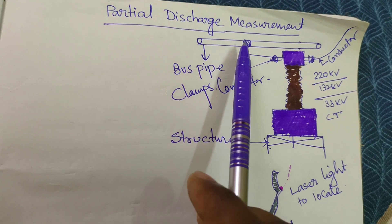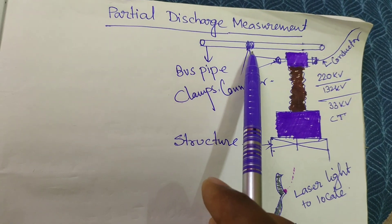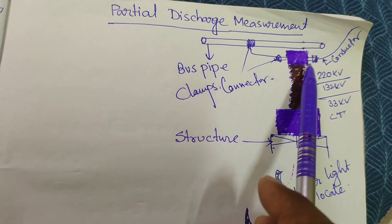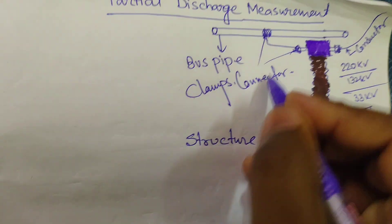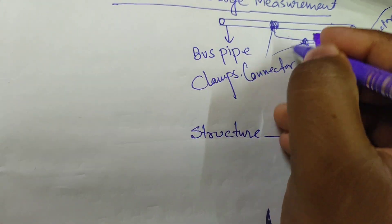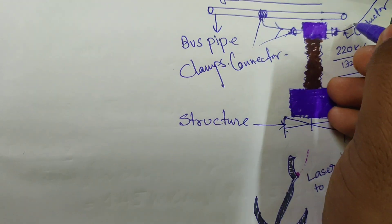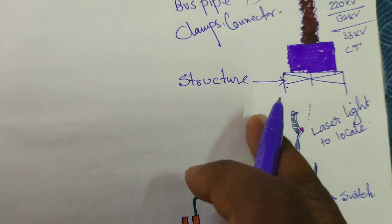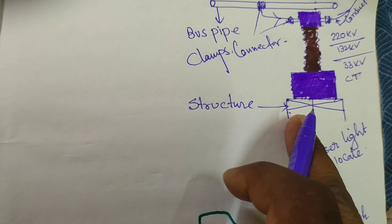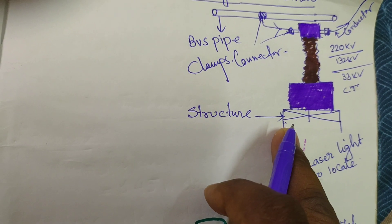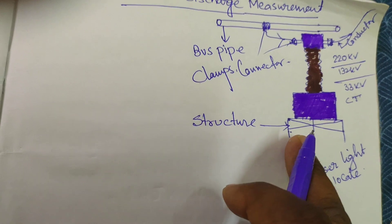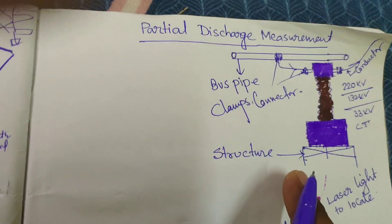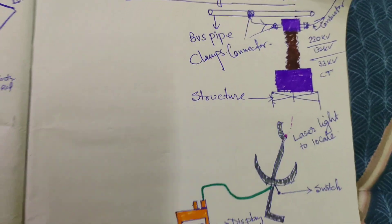The conductor may be Moose to CT star, Panther to CT star, Zebra to CT star — whatever the situation. This is the T-connector, connected with this conductor for flowing of current from one side to the other. This is the structure on which the current transformer is based, maintained at the proper height from ground level as per the standard.